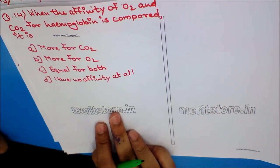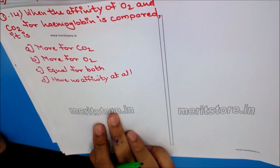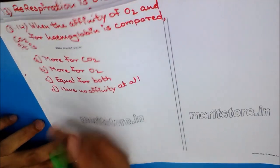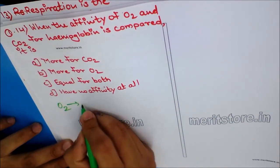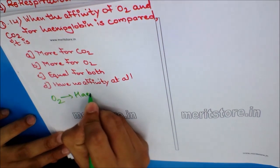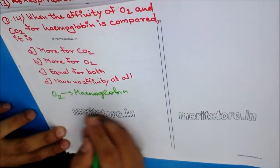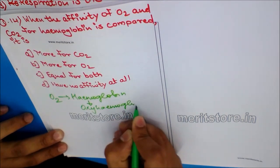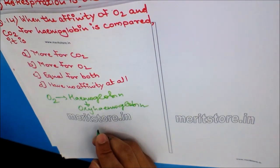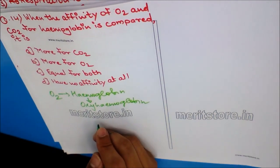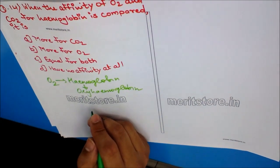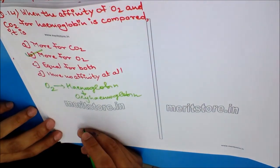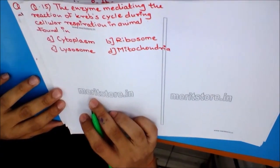Question 14: When comparing the affinity of O2 and CO2 for hemoglobin, it is? Options: A) More for CO2, B) More for O2, C) Equal for both, D) No affinity at all. Oxygen has more affinity to combine with hemoglobin to form oxyhemoglobin. This property is essential for the proper transport of oxygen to various parts of the body through the RBCs. The answer is more for oxygen.